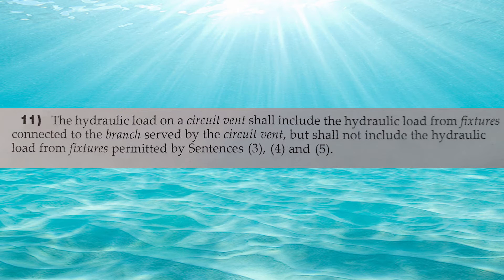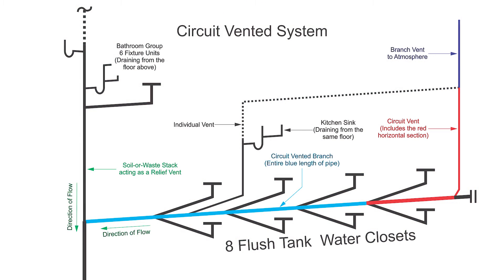Part 11. The hydraulic load on a circuit vent shall include the hydraulic load from fixtures connected to the branch served by the circuit vent, but shall not include the hydraulic load from fixtures permitted by sentences 3, 4, and 5. So this clause is directing us on how we're supposed to count up our fixture units or our hydraulic load to size the circuit vent, which is this part here.